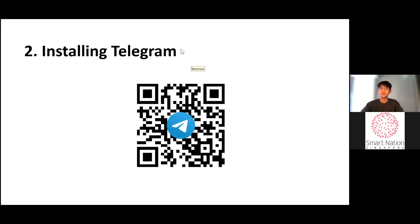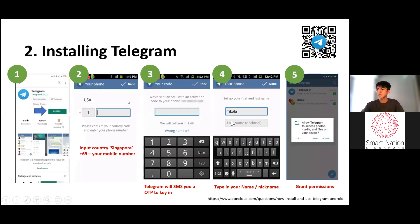I'll be going through the setup of the app in the next slide — this step is just to install the app. Once you have installed the app, let's set it up. Input the country as Singapore as well as your mobile number. Telegram will then SMS you an OTP, which is a one-time password for you to key in. After which, type in your username and grant Telegram permissions.